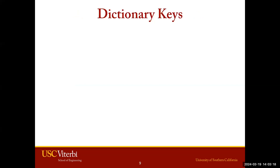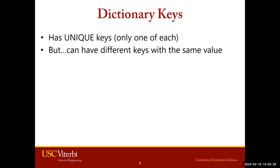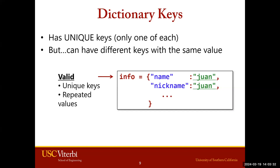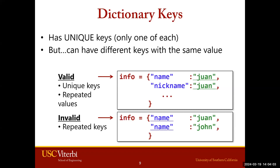Let's take a look at a few examples. We want dictionaries with unique keys — only each key once — but different keys can have the same values. In our first example, info_dictionary holds contact information with two key-value pairs: name and Juan, nickname and Juan. The keys are unique with the same value of Juan, and that's okay. In the second example, the dictionary has name and Juan and name and John — this is not valid because we are using the same key multiple times. Remember, keys must be unique.